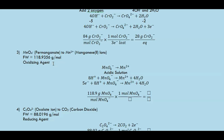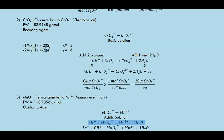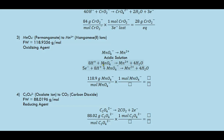Permanganate turns into manganese divalent ion (Mn²⁺). The formula weight for permanganate is given. In an acidic solution, you balance the redox reaction by adding H₂O to the side lacking in oxygen and balancing with hydrogen ions. To balance charges — there is +8 minus 1, giving 7 on the left and 2 on the right — you need to add 5 electrons to the left side.